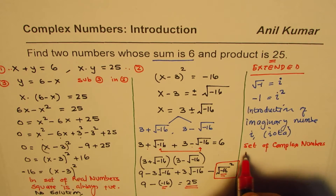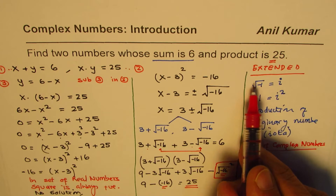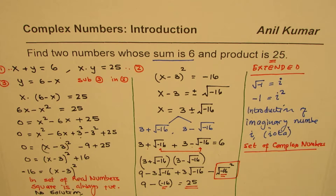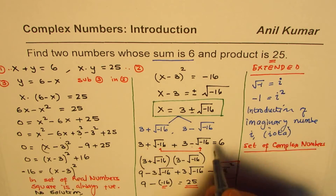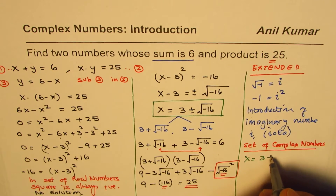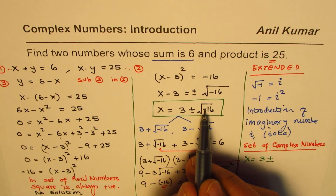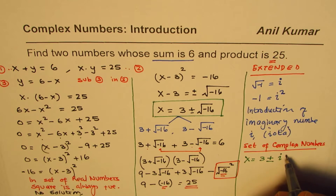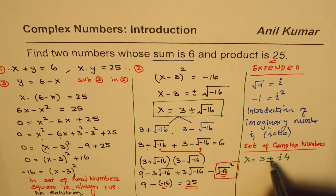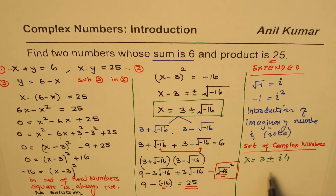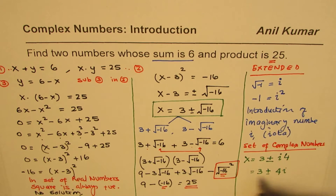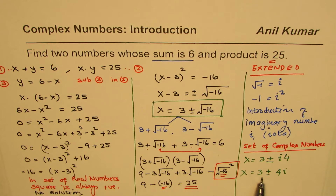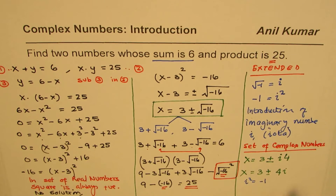In the set of complex numbers we have all the real numbers plus numbers which include √(−1). Taking the set of complex numbers, we can now provide a solution. We write x equals 3 plus or minus √(−1) times √16, which is i times 4 — so x equals 3 plus or minus 4i. We have two solutions: 3 plus 4i and 3 minus 4i, where i is the imaginary unit and i² equals −1.